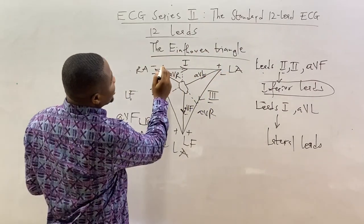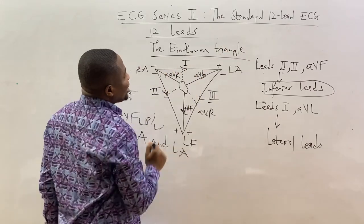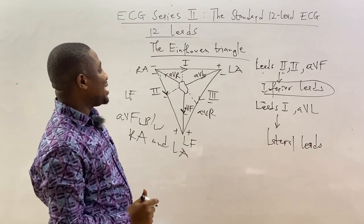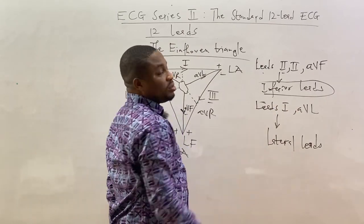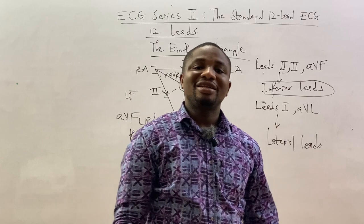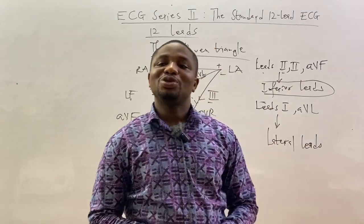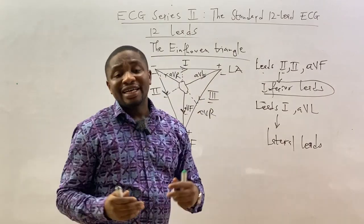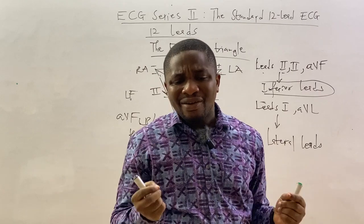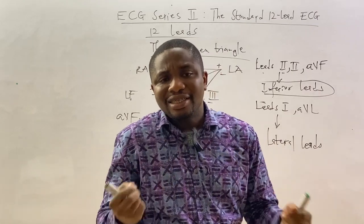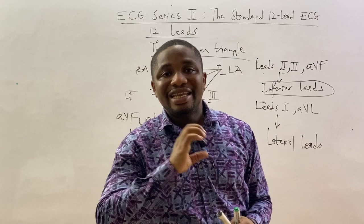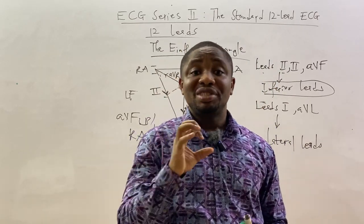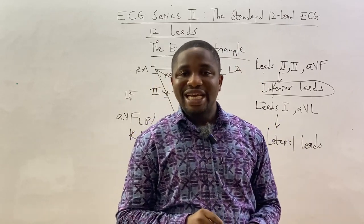Lead one looks to the side toward the left — it is a lateral lead. AVL also looks toward the left — it is a lateral lead. So lead one and AVL are classified as lateral leads. As for AVR, in the standard 12-lead ECG, AVR does not have a significant role unless there is a right ventricular infarction, which we will discuss when we get to the precordial leads.